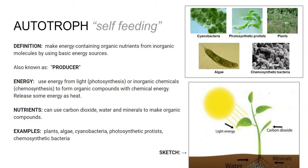Autotroph — remember that 'troph' refers to where you feed, and 'auto' means self. So autotroph literally translates into self-feeding; these organisms can feed themselves. They make their own nutrients, their own organic molecules, from inorganic molecules using basic energy sources. They're also known as producers because they can produce their own food, so autotroph is synonymous with producer.